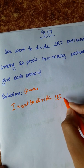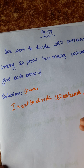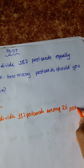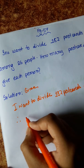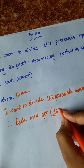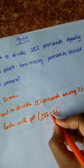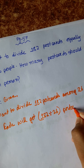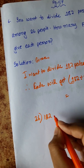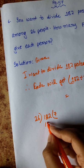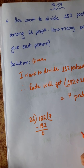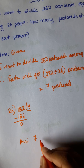182 postcards divided among 26 people. 26 times 7 equals 182. Therefore, each person gets 7 postcards. So the answer is 7 postcards.